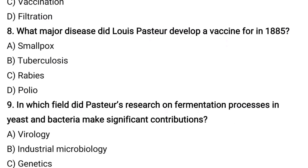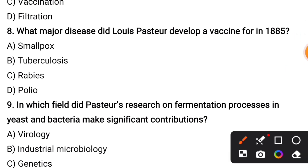What major disease did Louis Pasteur develop a vaccine for in 1885? Options are smallpox, tuberculosis, rabies, polio. The correct answer is rabies.